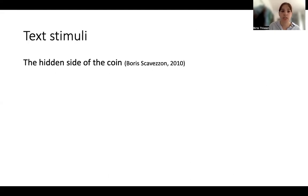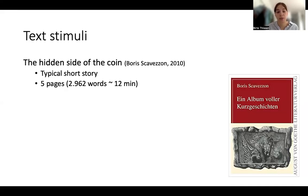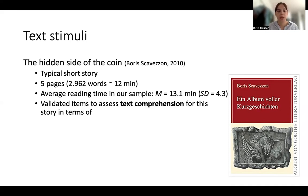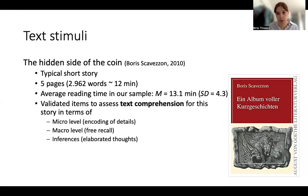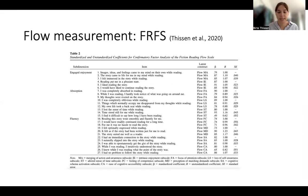The text stimulus we used is a short story called 'The Hidden Side of the Coin' by Wes Garrison, published in his book. It's a typical short story with a plot twist at the end, five pages long, with approximately 12 minutes of reading time — which our sample came close to. Importantly, we already had validated items to assess text comprehension for this story at the micro level, the macro level, and the inference level. For flow measurement, we used the FRFS scale, with internal consistency of 0.95 in our sample.